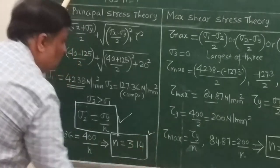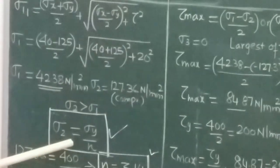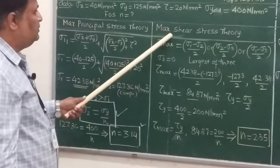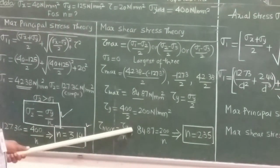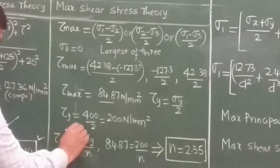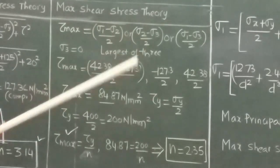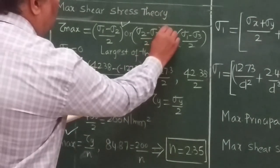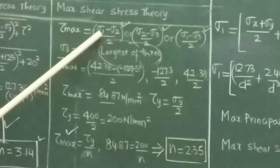So this is according to the maximum principal stress theory: finding the maximum and minimum principal stresses and equating to the yield stress gives you the factor of safety. Similarly, according to maximum shear stress theory, we equate the maximum shear stress to shear stress at yield point divided by factor of safety. For this, we need to find the maximum shear stress by taking the differences of the three principal stresses: (σ₁ - σ₂)/2, (σ₂ - σ₃)/2, and (σ₁ - σ₃)/2. The largest of these three gives the maximum shear stress.